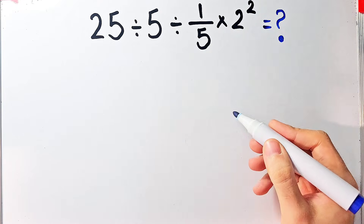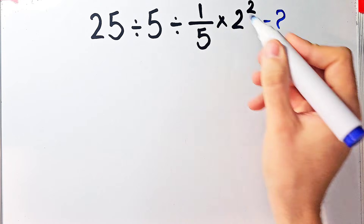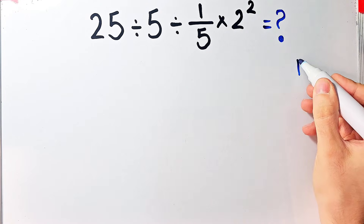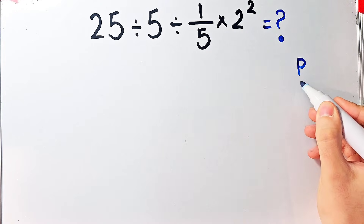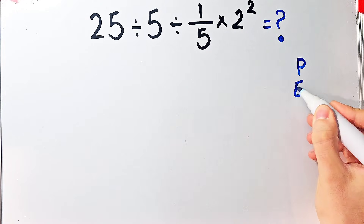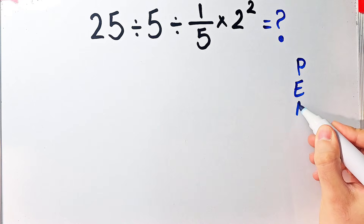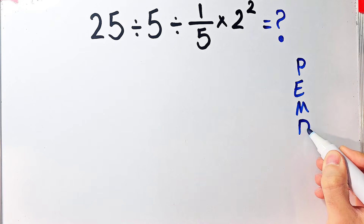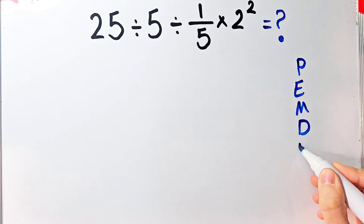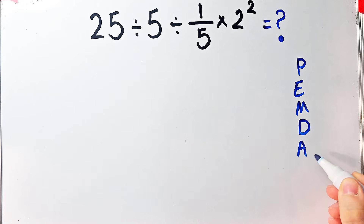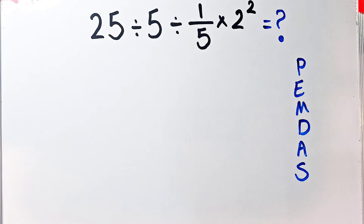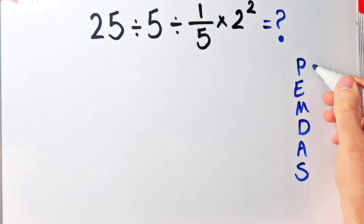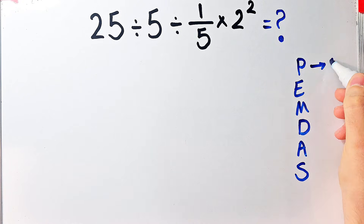In this question we have division, multiplication, and exponent. To solve this question we need to follow the PEMDAS rule. PEMDAS shows the priority of the mathematical operations, and if you don't pay attention to this rule you get the wrong answer. In this rule, P stands for Parentheses.